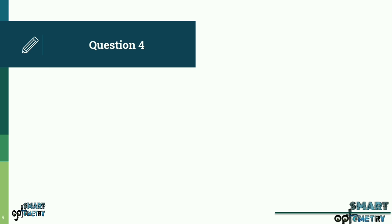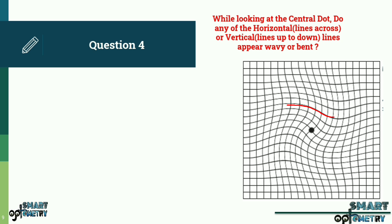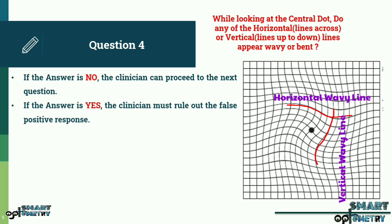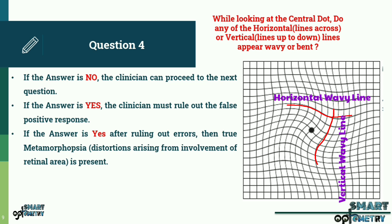Question 4: While looking at the central dot, do any of the horizontal lines (lines across) or vertical lines (lines up and down) appear wavy or bent? If the answer is no, the clinician can proceed to the next question. If yes, the clinician must rule out a false positive response that may occur due to the patient noticing distortion while looking through different segment borders of a trifocal lens or through the periphery of a progressive addition lens. If the answer is still yes after ruling out errors, then true metamorphopsia — distortions arising from involvement of the retinal area — is present.